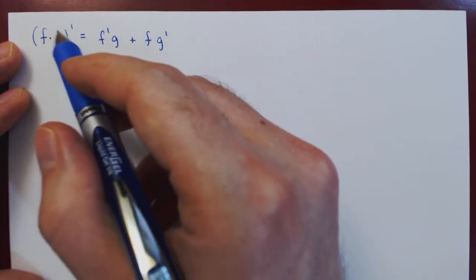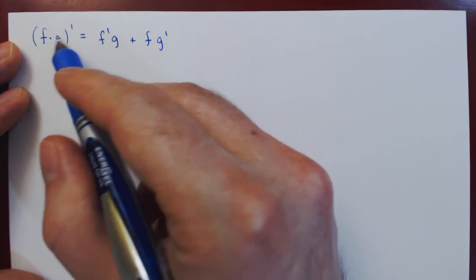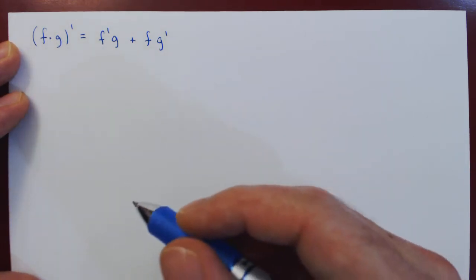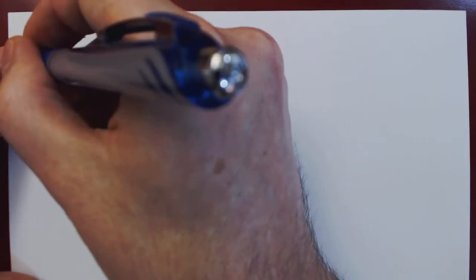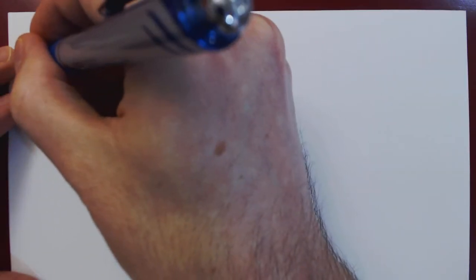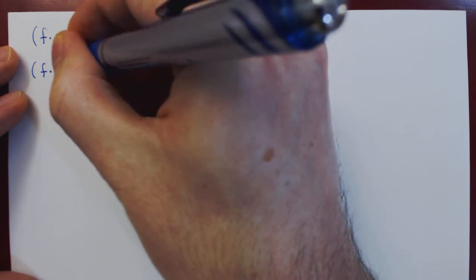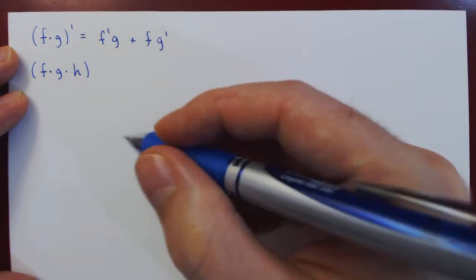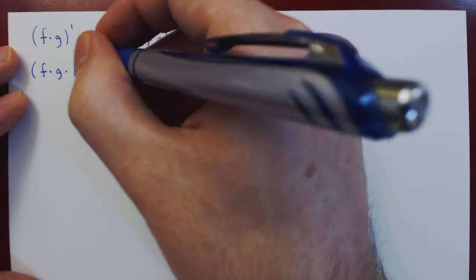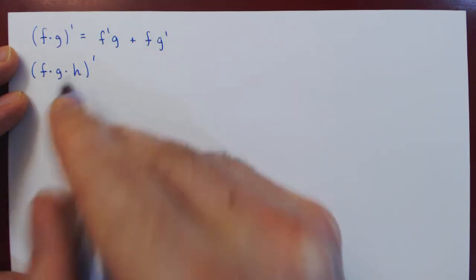This is how the derivative operates over a single product between two functions. You might ask: what if we multiply not two functions together, but three functions together? So f times g times h — how can we differentiate two products between three functions?